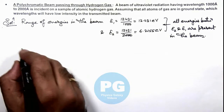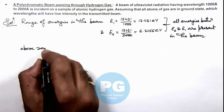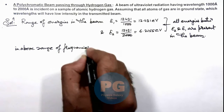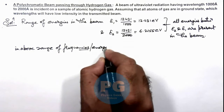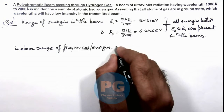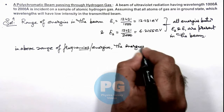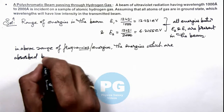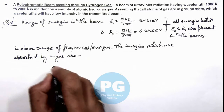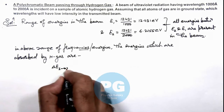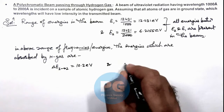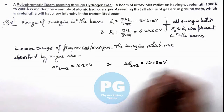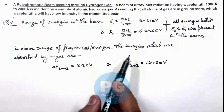In the above range of corresponding energies, the energies which are absorbed by hydrogen gas are: first, the energy corresponding to transition 1 to 2, which is 10.2 electron volt; and the other energy is for transition 1 to 3, which is 12.09 electron volt. Transition 1 to 4 corresponds to 12.75 electron volt, which should not be present in this range.